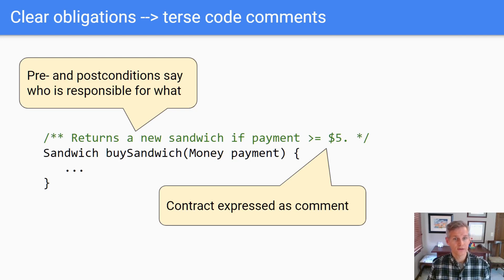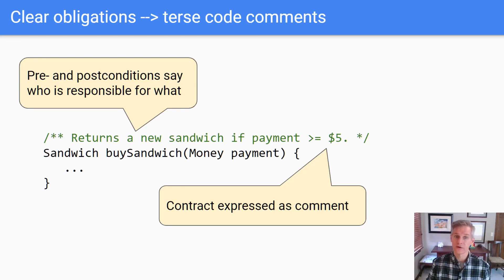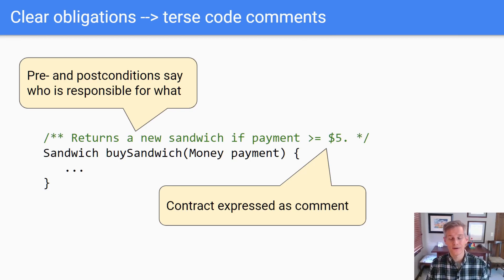If you write a contract that's confusing, you're going to look at that and say, 'That's not the kind of code I want to design.' When your contracts are short and to the point, you know your design is on the right track. Conversely, if it's hard to write the contract, it's going to be hard to understand and use the code.